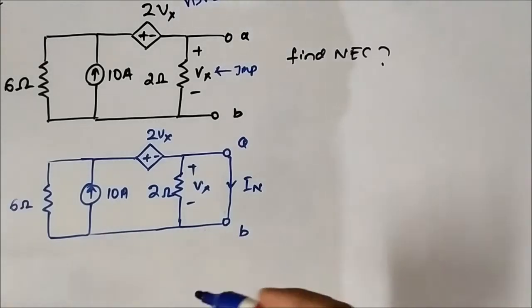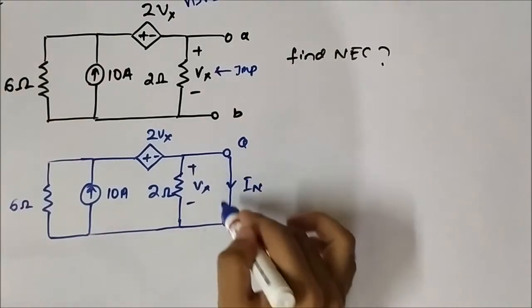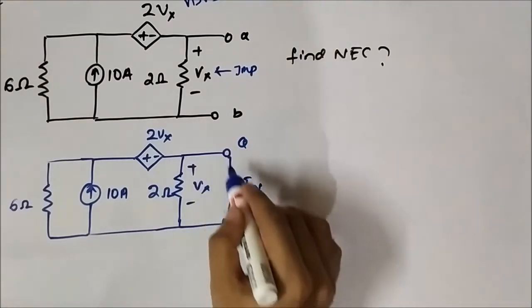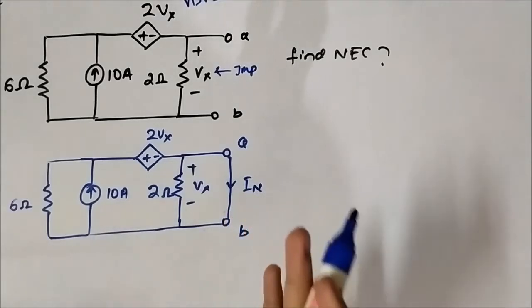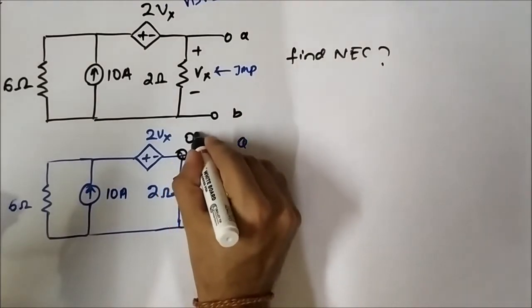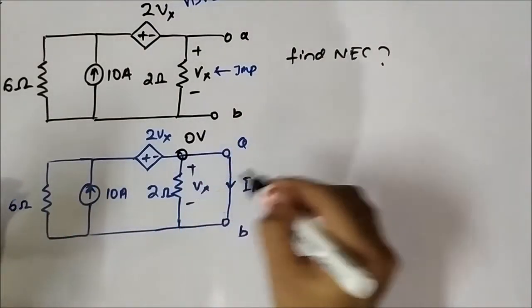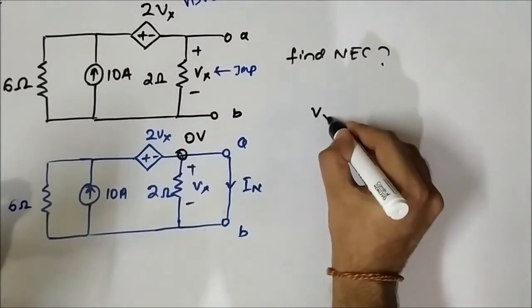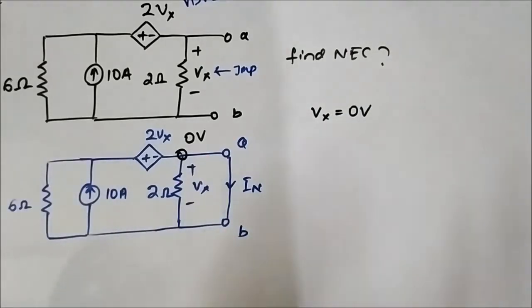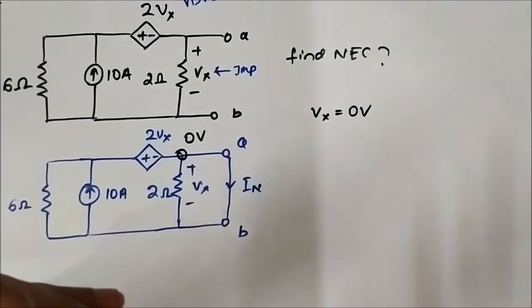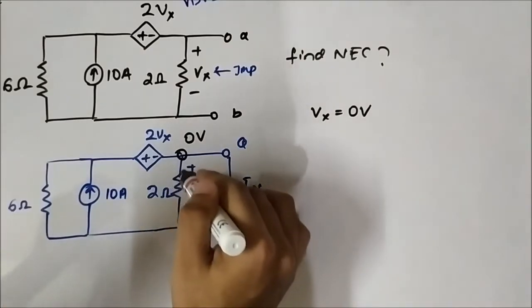Now, the important thing to notice here is that as these two terminals get shorted together, the voltage here is 0V. And in parallel, the same voltage always appears. So here also the voltage will be 0V. We can say that the voltage across the 2 ohm resistor at this point is 0V. So Vx is also equal to 0V — all this because the terminals A and B get shorted together and the shorted path makes the voltage 0.